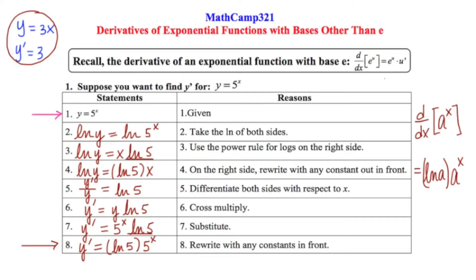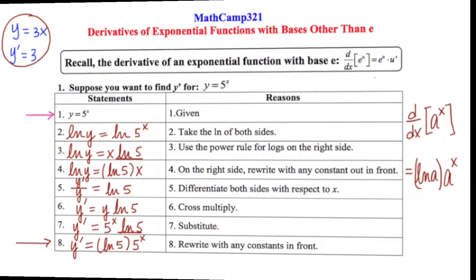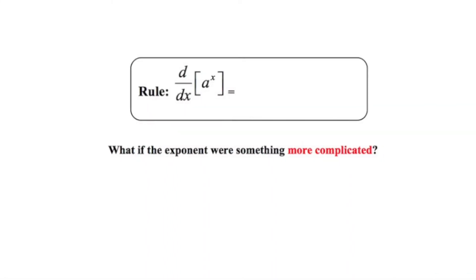Let's go on to the second slide. To generalize: if we're trying to take the derivative of an exponential function whose base is not e — let's call that base a — we end up getting the natural log of that base times a restatement of the original problem. But this begs the question: what if the exponent were something more complicated than just an x? Let's see how to tackle that on the next slide.